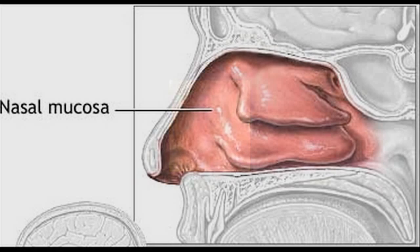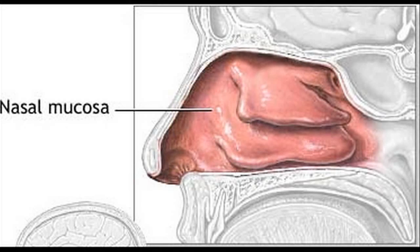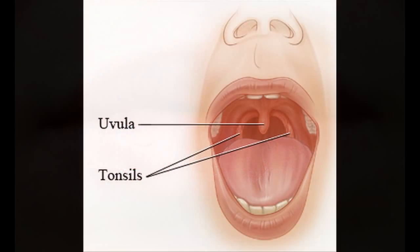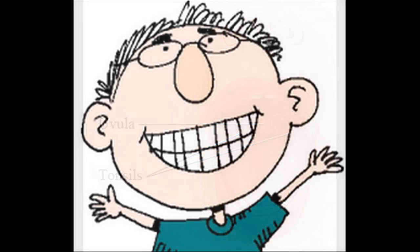Nares patent with septum midline, mucosa pink and moist, mouth and lips moist. Uvula raises midline, no missing, cracked, or chipped teeth. Gums pink, tongue protrudes midline.